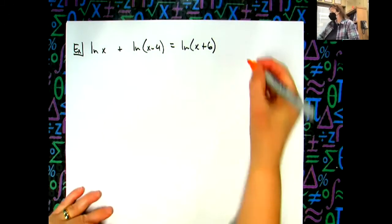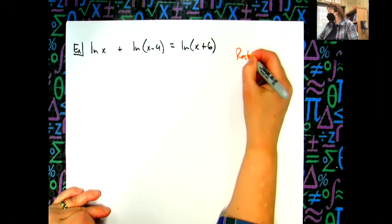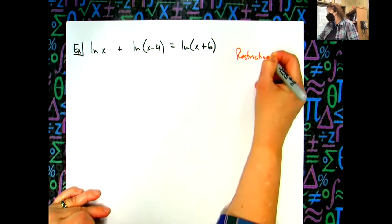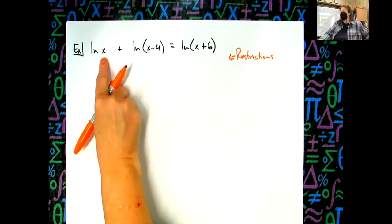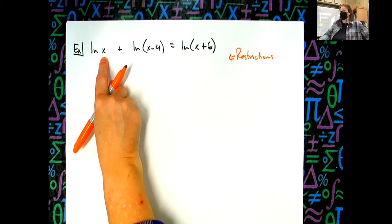Alright, let's go ahead and look at our restrictions before we start. So right here x would have to be greater than zero because we can't take the log of zero. X has got to be greater than zero.